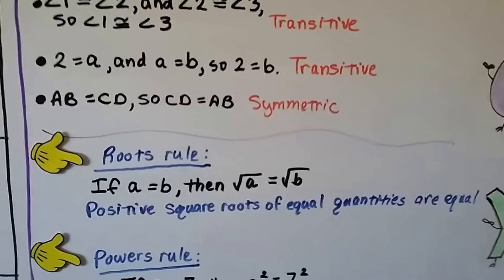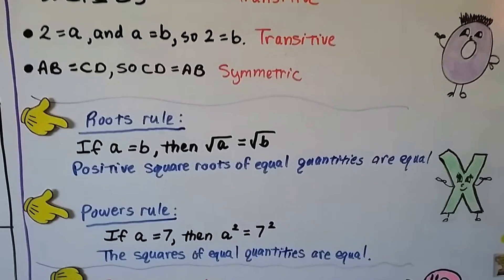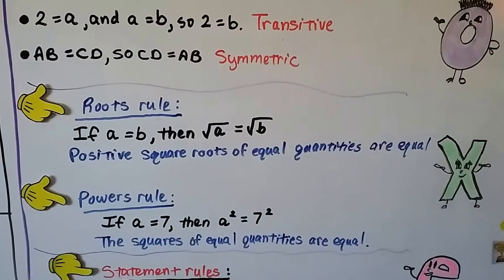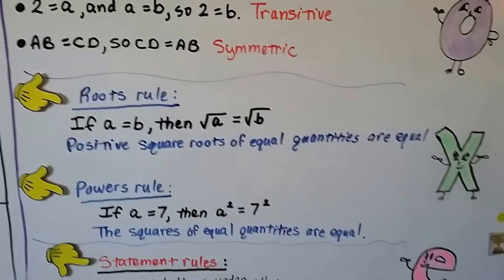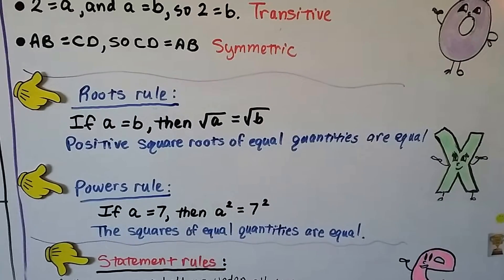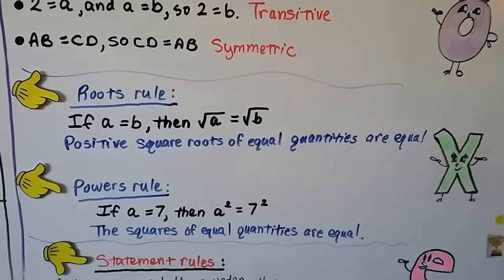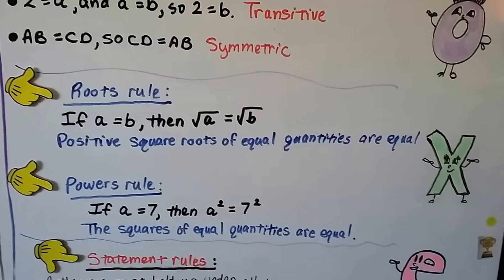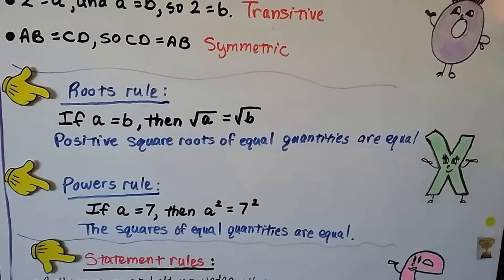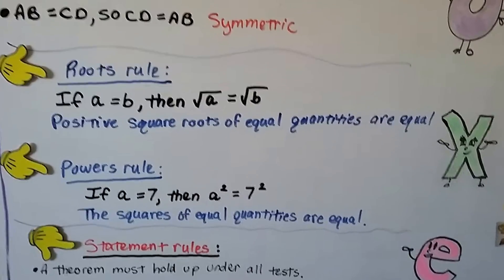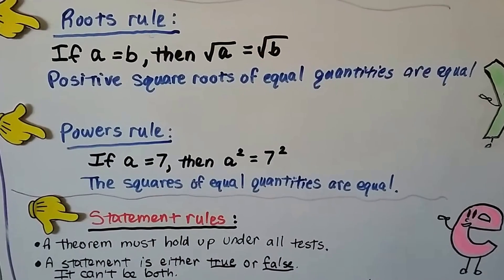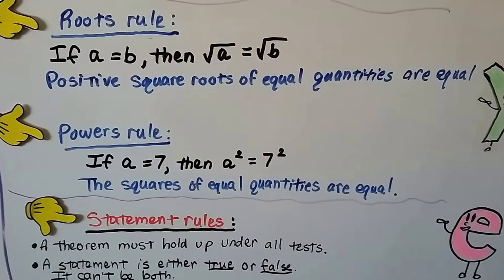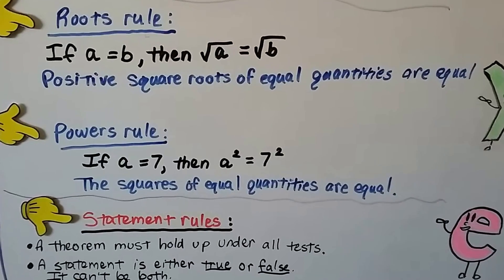We also have a roots rule — not in your book, but helpful to know. If A equals B, then the square root of A equals the square root of B; positive square roots of equal quantities are equal. There's also a powers rule: if A equals 7, then A squared equals 7 squared; the squares of equal quantities are equal.